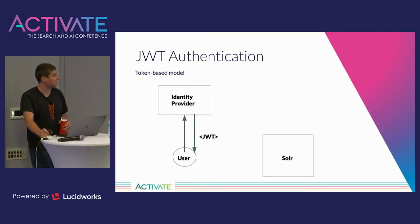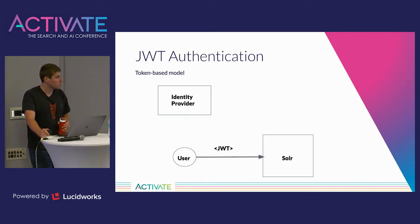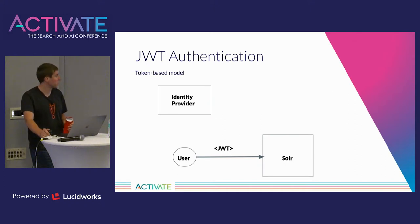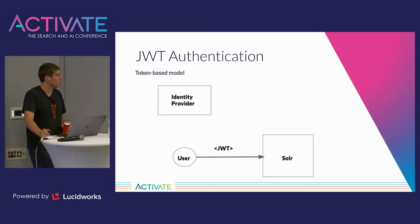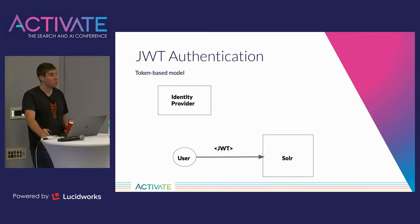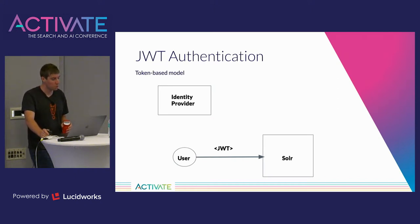The token that comes back is the actual JWT — JSON Web Token. The second step is that once the user gets their JWT, they can make their request to Solr and send the JWT along. Solr gets the token and, using the identity provider's public key, it verifies the signature and makes sure everything checks out. If the signature is valid and the token isn't expired, Solr treats the user as authenticated; otherwise, Solr rejects the request. That's the basic idea behind JWT authentication.